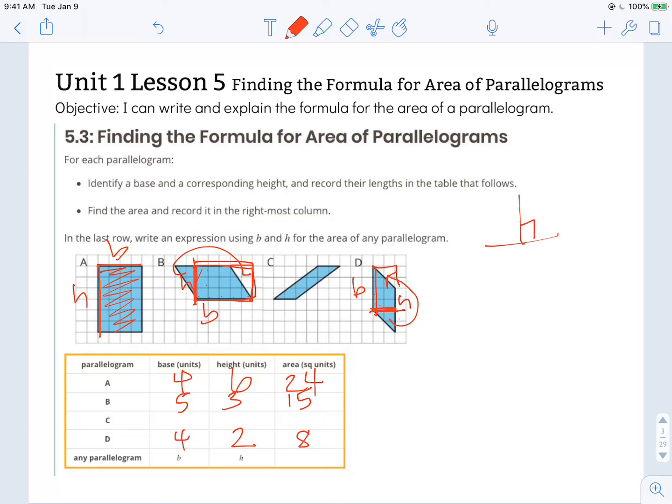So you'll notice each time I took the base and I multiplied it by the height to get base times height or the area of that parallelogram. So the area, the formula for the area of a parallelogram can be found by substituting the base of the parallelogram and the height of the parallelogram and multiplying those together.